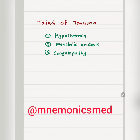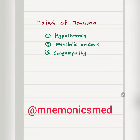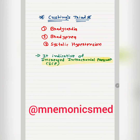The Triad of Trauma consists of three things: hypothermia, metabolic acidosis, and coagulopathy. You have to remember these for the trauma triad.